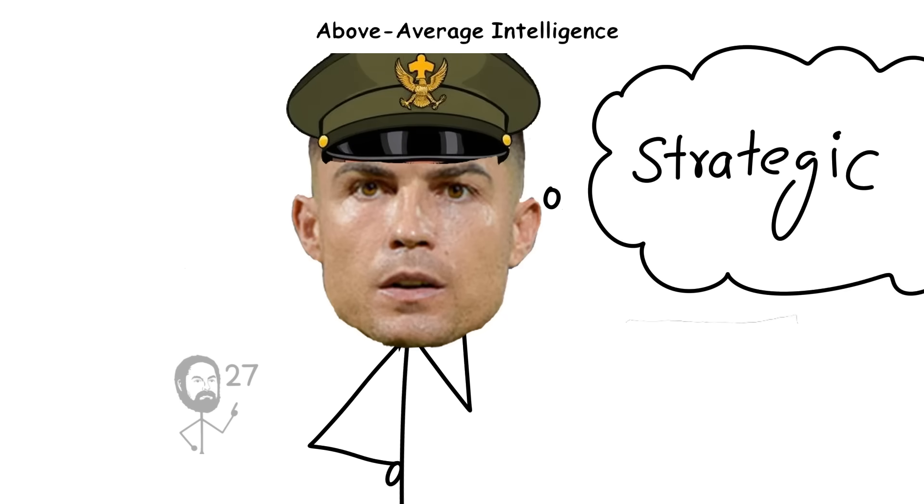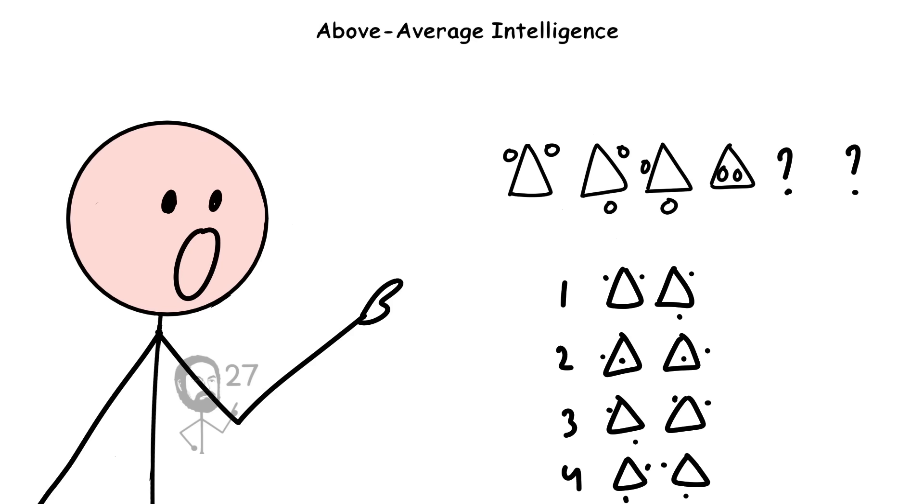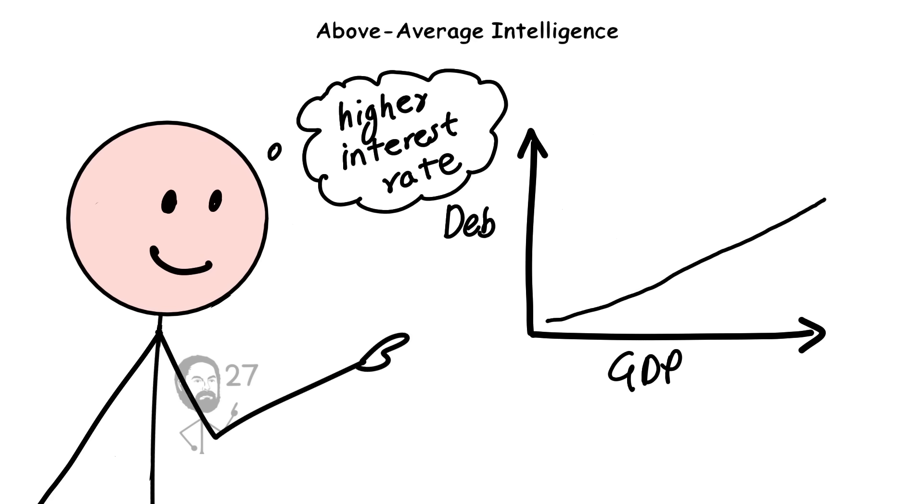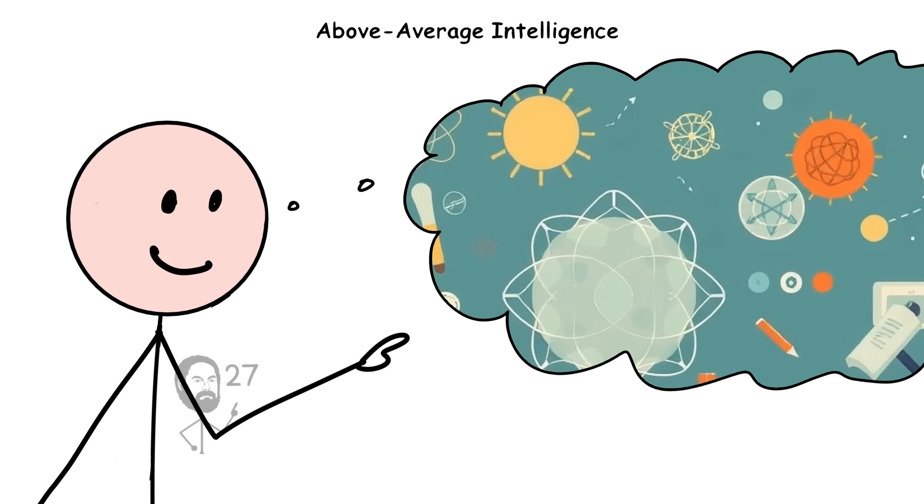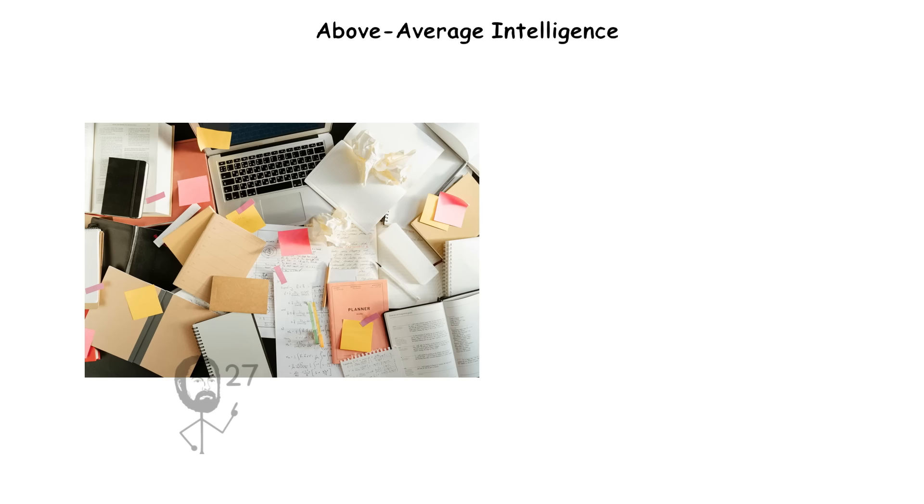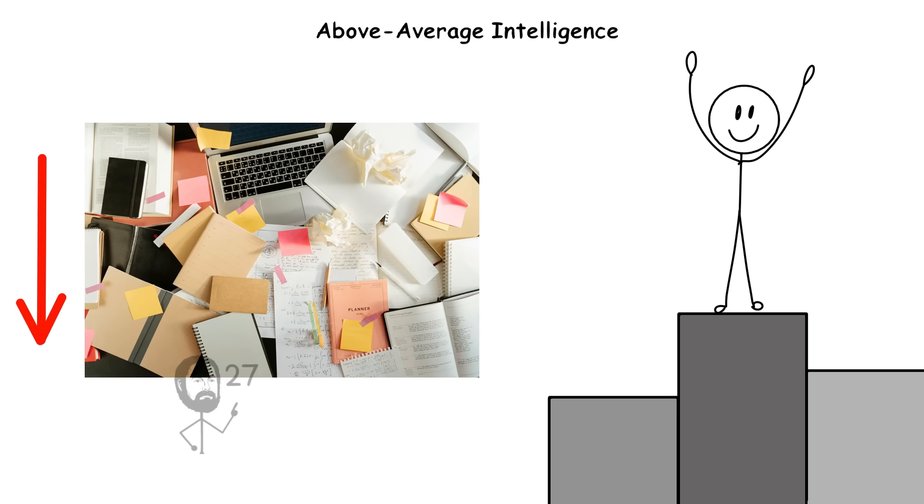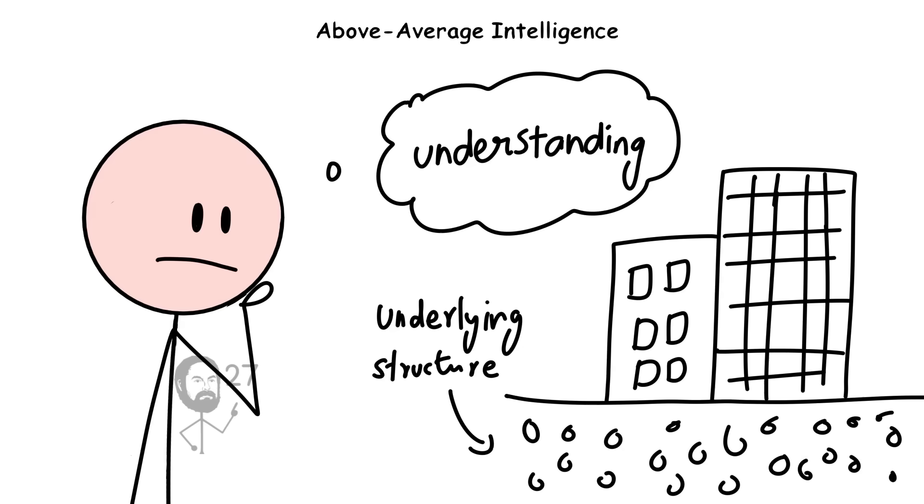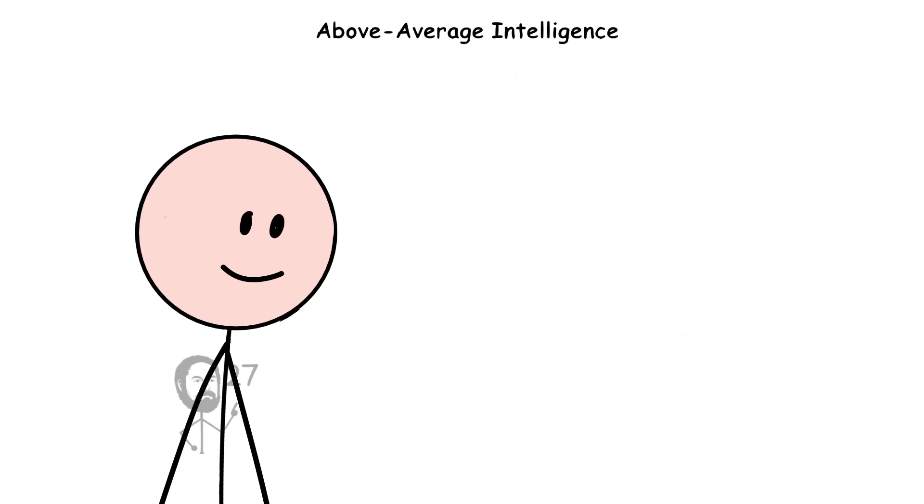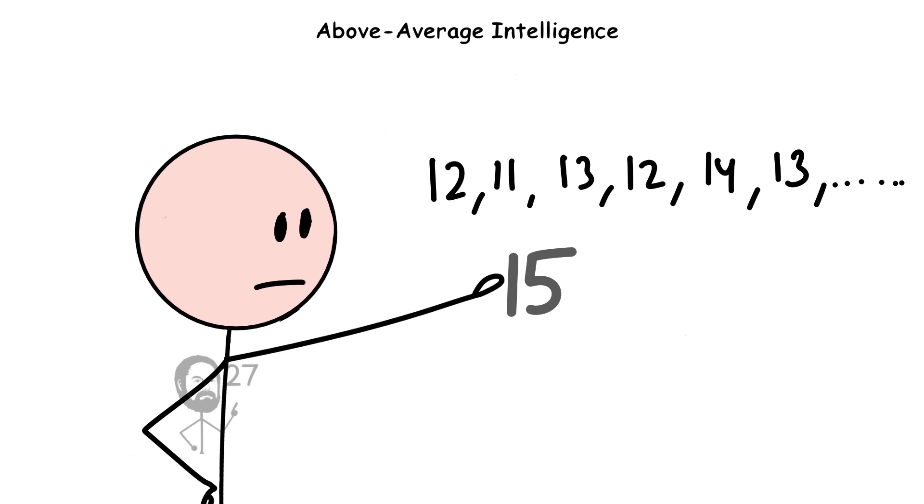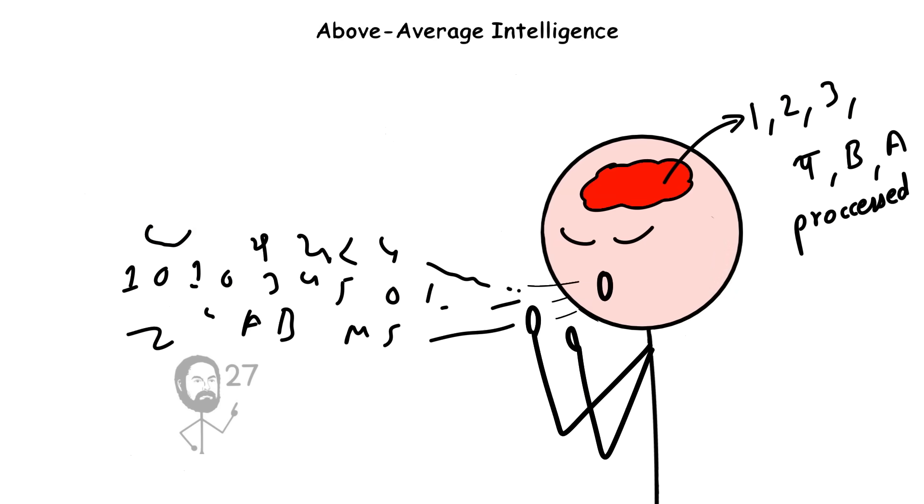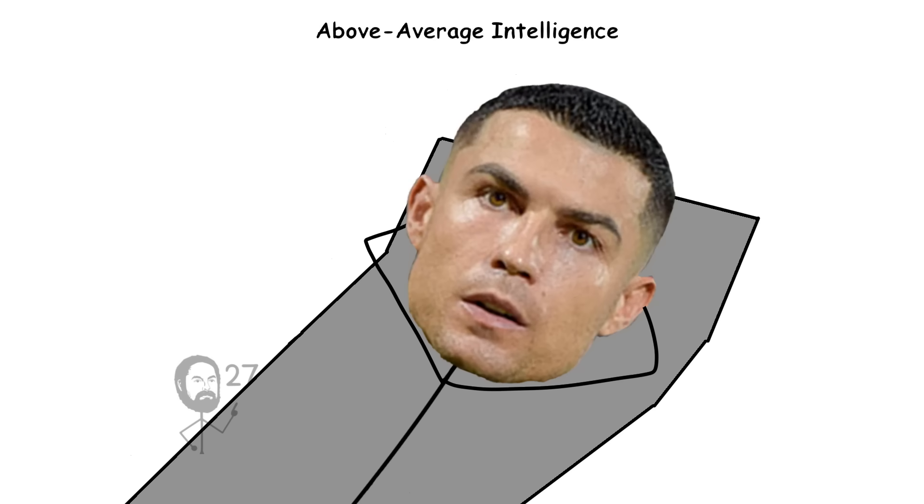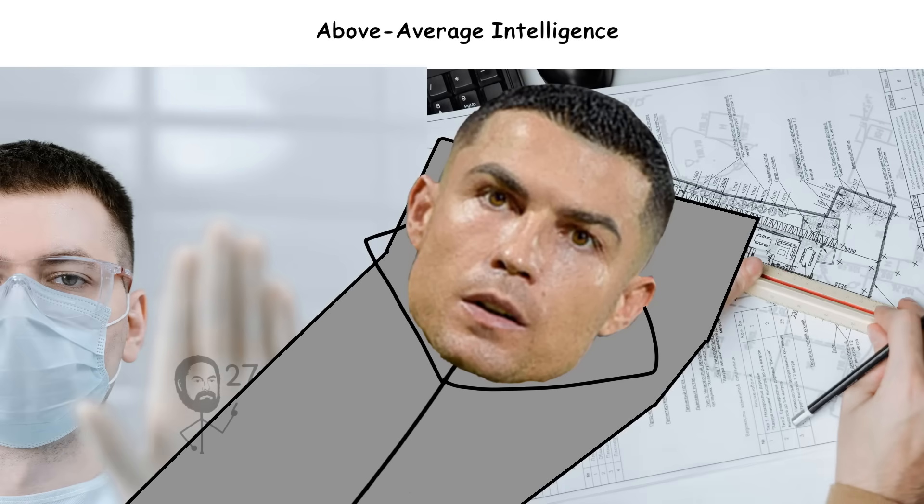Their thinking tends to be more strategic and conceptual. They can connect patterns, anticipate outcomes, and visualize complex systems with ease. In academic settings, they often perform well without excessive study, as their comprehension extends beyond memorization to understanding underlying structures and relationships. They may also excel in language use, logical reasoning, and rapid information processing, allowing them to adapt effectively in dynamic or high-demand environments.